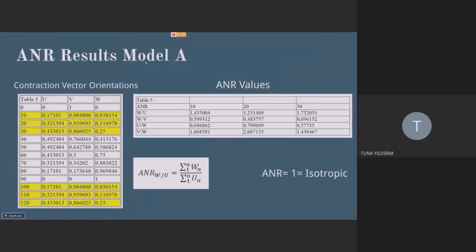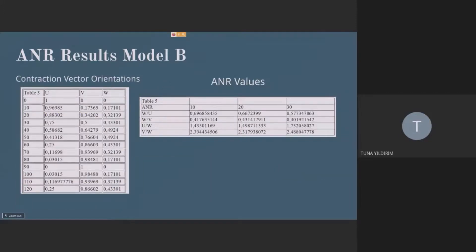But when we examine ANR values, we have no value which is equal to 1. If ANR is equal to 1, that means the material is isotropic in those directions. For model A, we didn't observe that. And for model B, the situation is also the same.